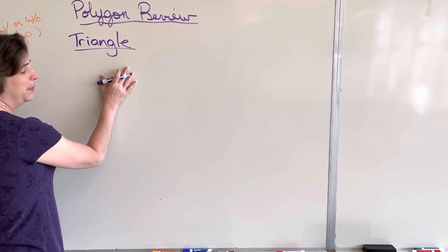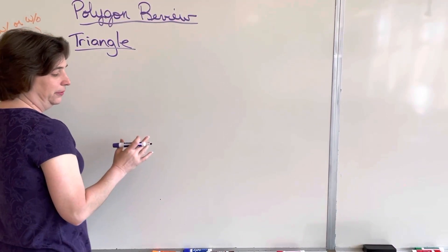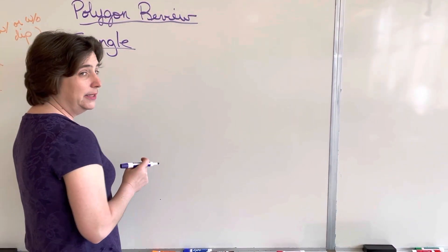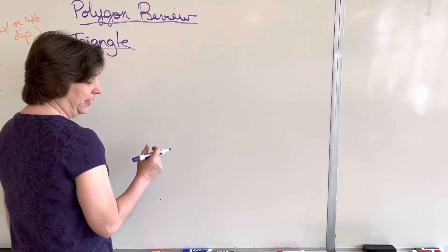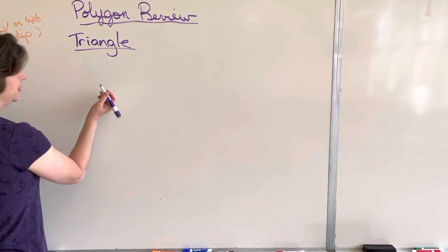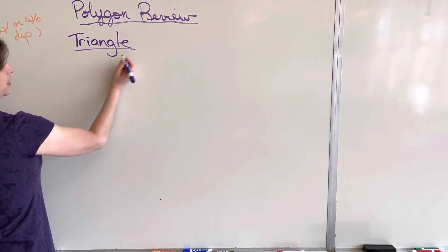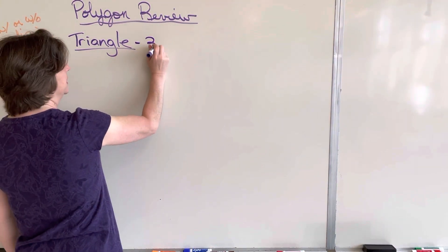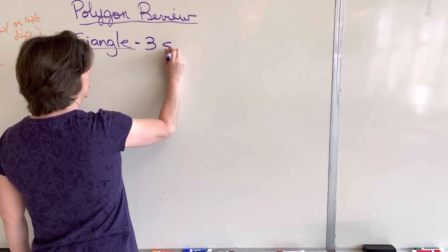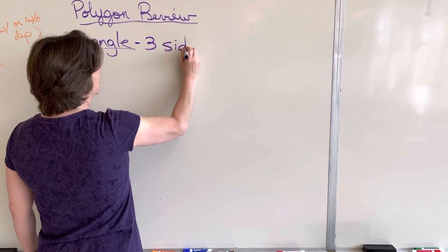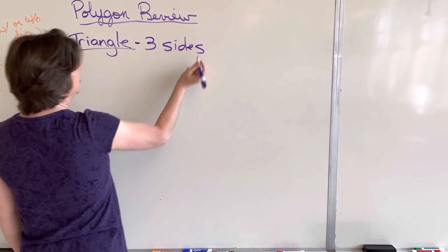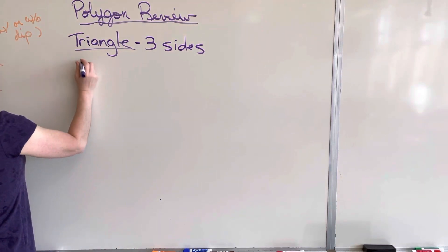Today we're going to do a polygon review. A polygon is a many-sided figure. We're going to start with triangles. A triangle has three sides, and we can name our triangles according to their sides and their angles.